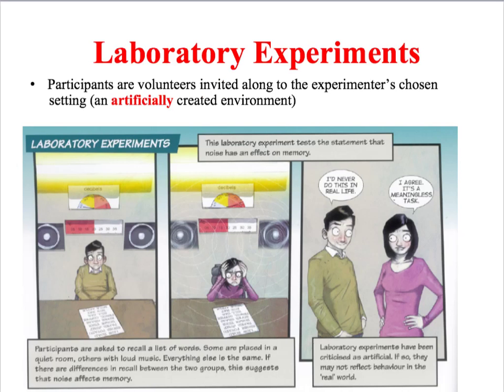In the social sciences, a laboratory experiment normally involves a researcher asking for volunteers who are then invited to the researcher's chosen setting — an artificially created environment — in order to take part in the experiment. The potential benefit of doing it in an artificially created environment is that you can control the variables. Variables such as lighting and temperature are kept the same for all participants; the only difference is the noise level. So if there are differences in memory which correlate with differences in noise level, this suggests that noise affects memory.